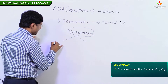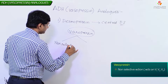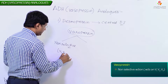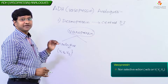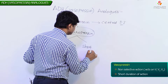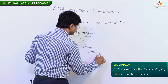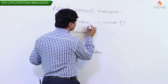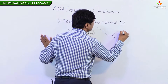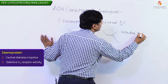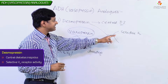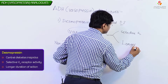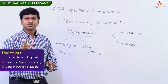Vasopressin has a non-selective action — it acts on both V1, V2, and V3 receptors. The other disadvantage of vasopressin is that it has a short duration of action. In order to avoid these issues, we use Desmopressin. Desmopressin has selective V2 receptor activity and a longer duration of action.